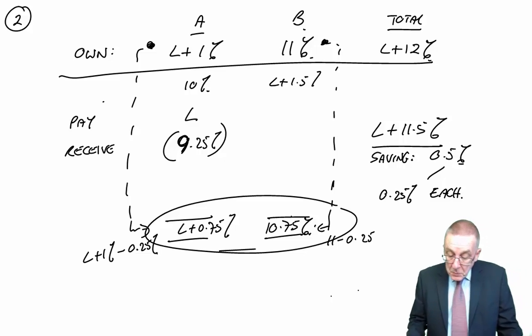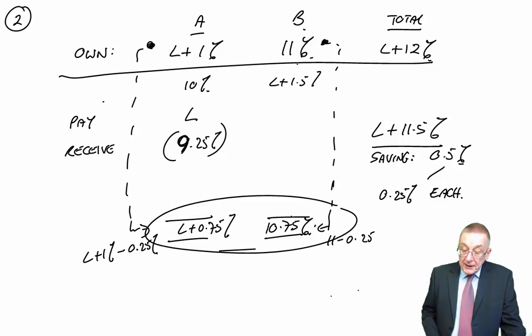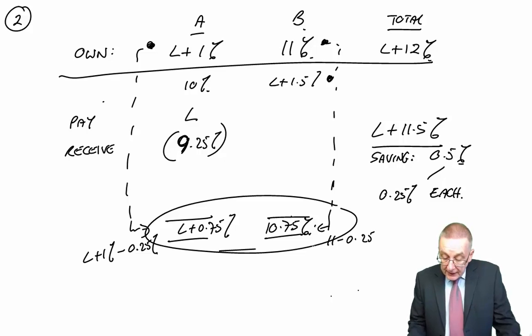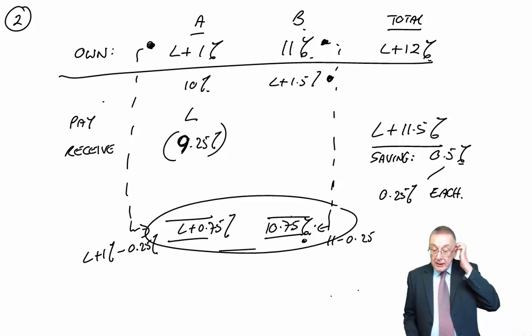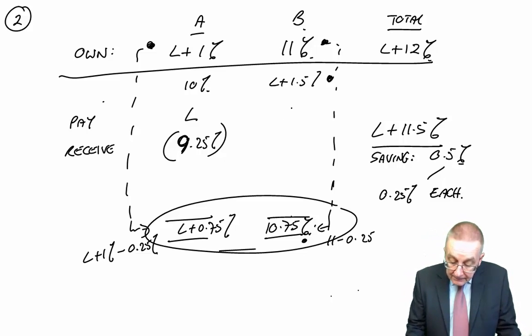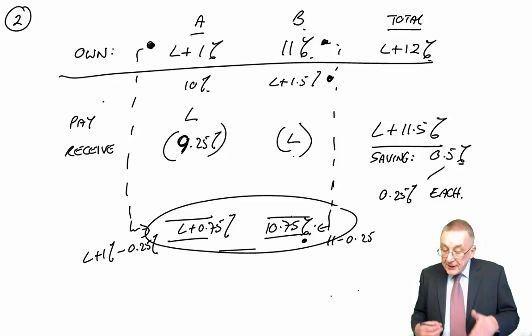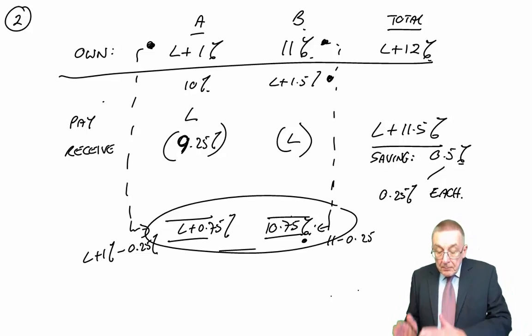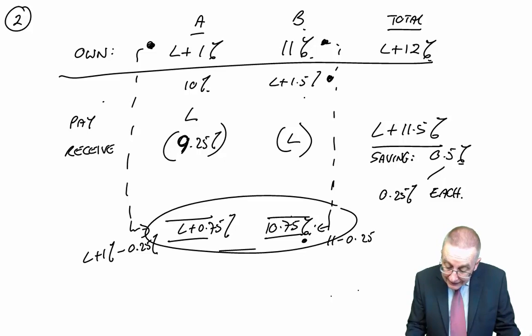And similarly to B, B, at the moment, they've borrowed the opposite of what they want. They're paying LIBOR plus 1.5. And we want to end up with them paying 10.75. So, the bank will make them a similar offer, but in reverse. The bank will say to them, we'll give you LIBOR, so they receive LIBOR, and so the net so far is one and a half percent. And the bank say in return, B will have to pay them 9.25.